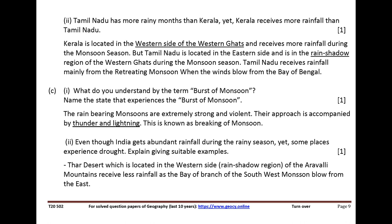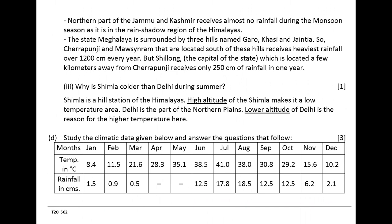Even though India gets abundant rainfall during the rainy season, yet some places experience drought. Explain giving suitable examples. The Thar Desert, located in the western rainshadow region of the Aravalli Mountains, receives less rainfall as the Bay of Bengal branch of the southwest monsoon blows from the east. The northern part of Jammu and Kashmir receives almost no rainfall during the monsoon season as it is in the rainshadow region of the Himalayas. The state Meghalaya is surrounded by three hills named Garo, Khasi and Jaintia. So Cherrapunji and Mawsynram, located south of these hills, receive the heaviest rainfall over 1,200 cm every year. But Shillong, located a few kilometers away from Cherrapunji, receives only 250 cm of rainfall in one year.